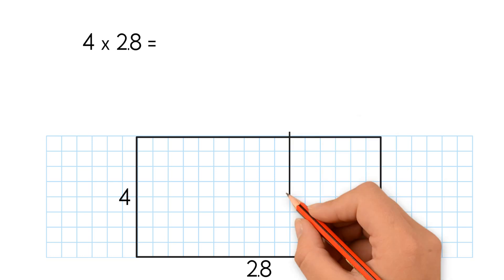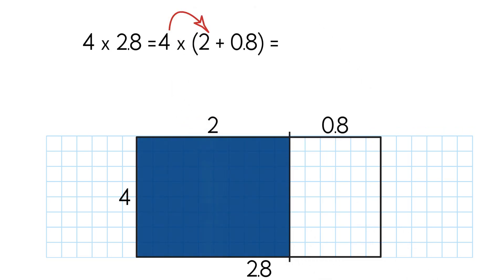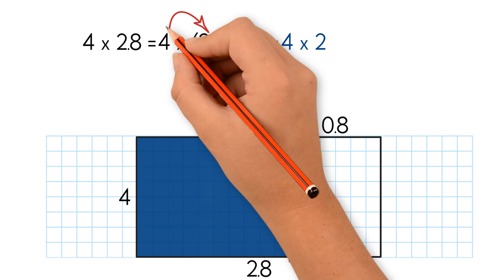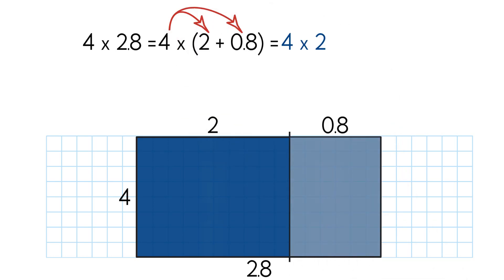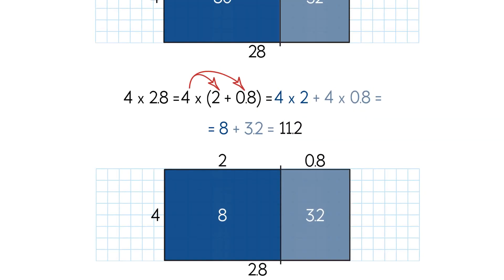We break up 2.8 into 2 and 0.8 — we separated the whole and decimal parts. Let's rewrite 2.8 in expanded form as 2 plus 0.8. Now we multiply using the distributive property of multiplication. We multiply 4 times 2, which is the area of the first smaller rectangle. Then we multiply 4 times 0.8, which is the area of the second smaller rectangle. We get 8 and 3.2 as the partial products. We add them up to find the product of 4 and 2.8. So 4 times 2.8 equals 11.2.